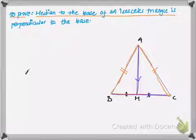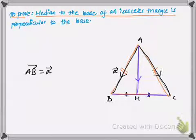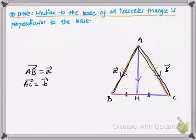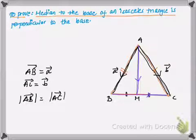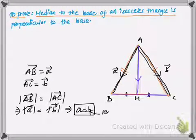First, I'll suppose vector AB is equal to vector a, and vector AC is equal to vector b. Since triangle ABC is isosceles with AB equal to AC, the magnitude of vector a equals the magnitude of vector b, which means a equals b in terms of length.